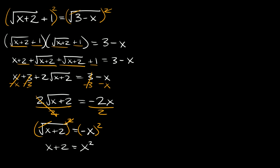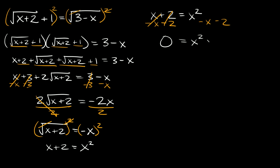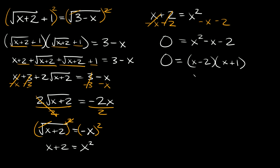Now it looks like we almost have a trinomial in standard form — x squared, an x, and our constant. So let's move everything to one side. We have x plus 2 equals x squared. Subtract x and subtract 2 from both sides, giving us 0 equals x squared minus x minus 2. Now we have a trinomial that we can factor: 0 equals x minus 2 times x plus 1. Setting each factor equal to 0, x equals positive 2 or x equals negative 1.